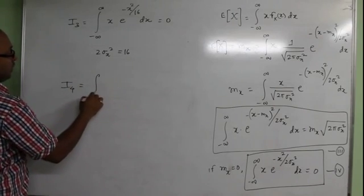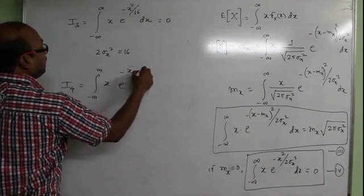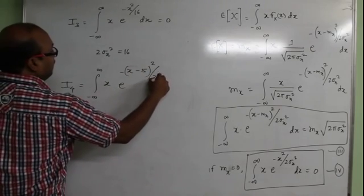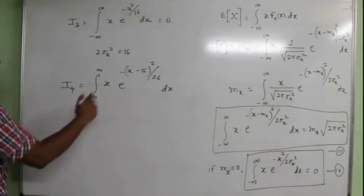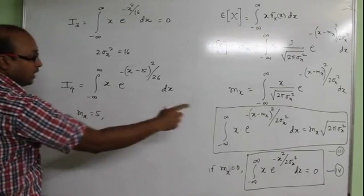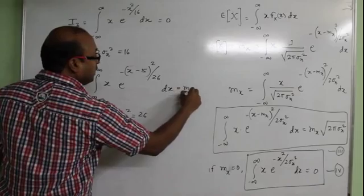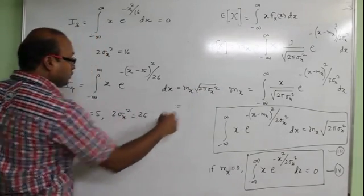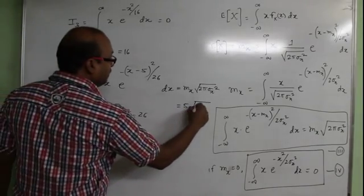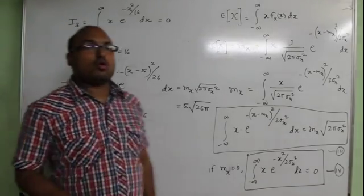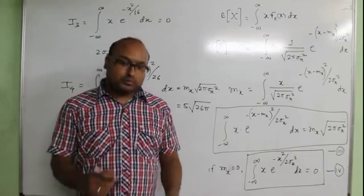If we have to find the value of the integral of X times e to the power minus (X minus 5) squared divided by 26, this integral is in the form of equation 3. By comparison, M_X equals 5 and 2 sigma_X squared equals 26. The value of the integration is M_X times square root of 2 pi sigma_X squared, which substituting gives 5 times square root of 26 pi. So by using the properties of Gaussian PDF, we can find the value of integrations that are in the form of a Gaussian function. Thank you.